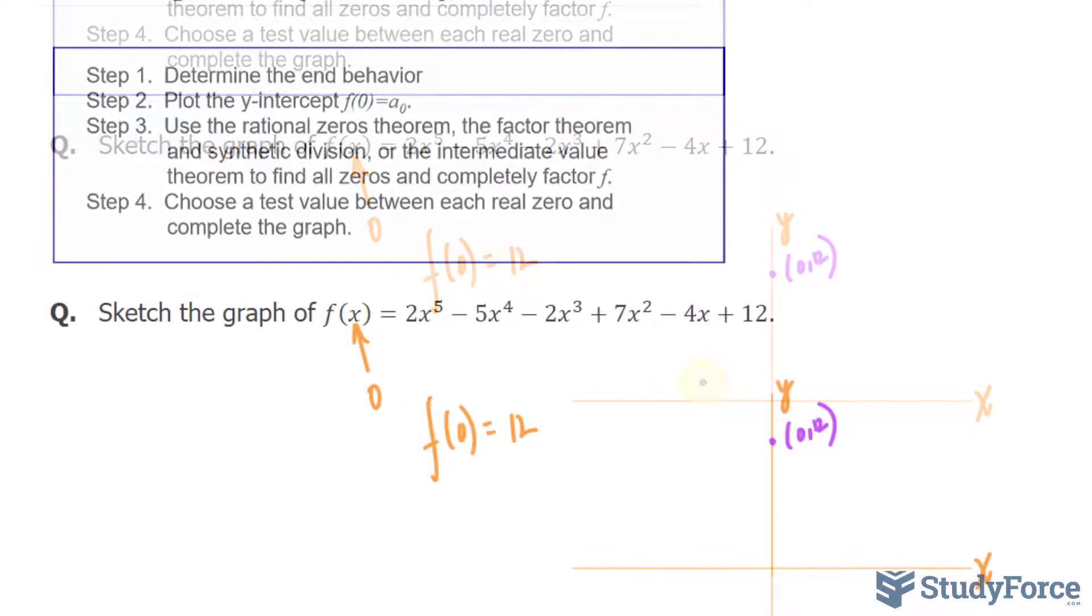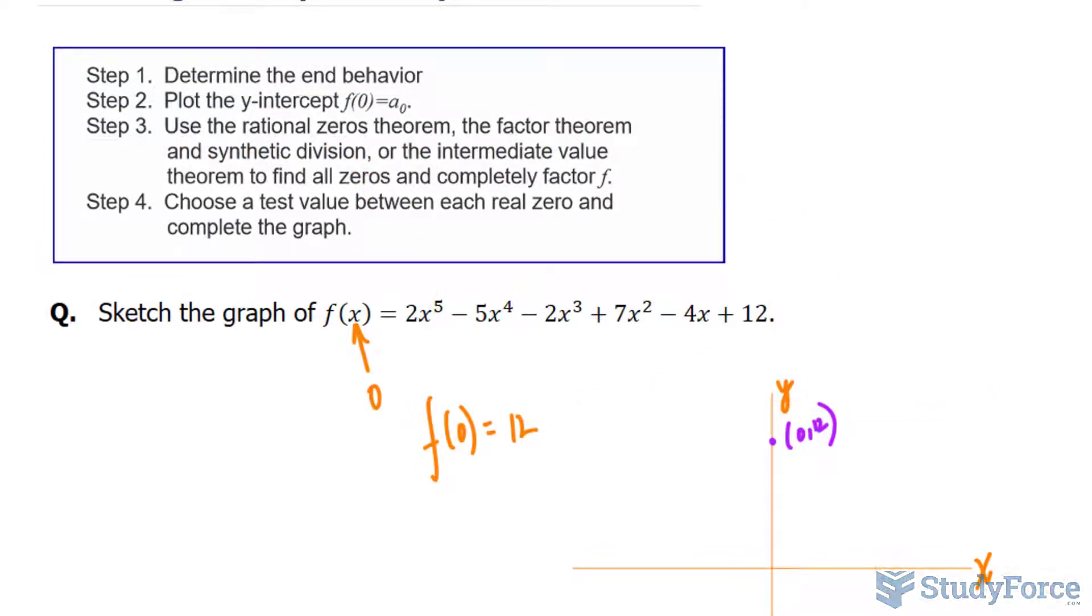Step number three says, use the rational zero theorem and factor theorem in synthetic division, or the intermediate value theorem, to find all zeros and completely factor f. However, before we do any of this, let's use Descartes' rule of signs to tell us how many positive real zeros there are and how many negative real zeros there are. And that is determined based on the number of sign changes from term to term. So this is positive to negative, that's one sign change. No change there, another change there, so that's two, three, and four.